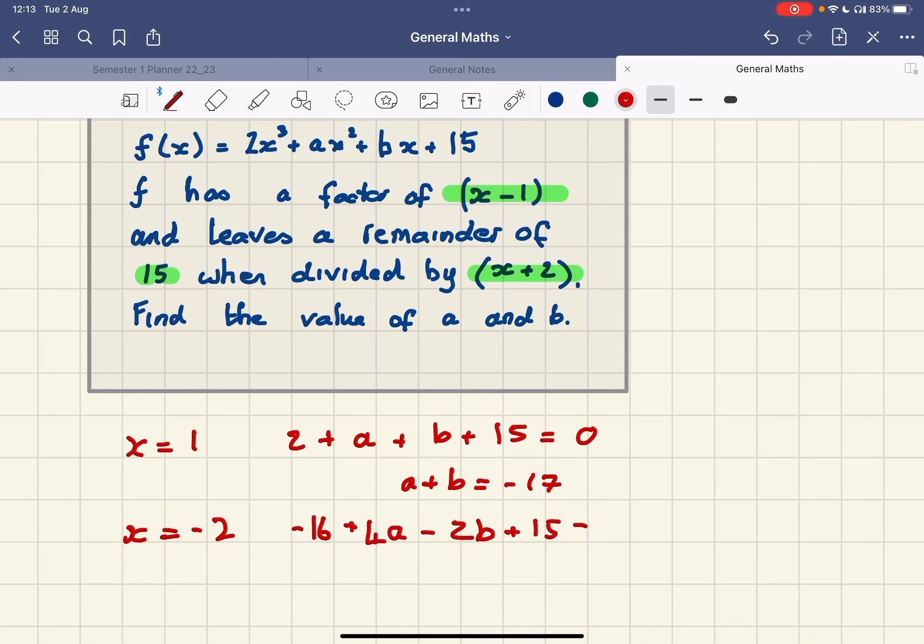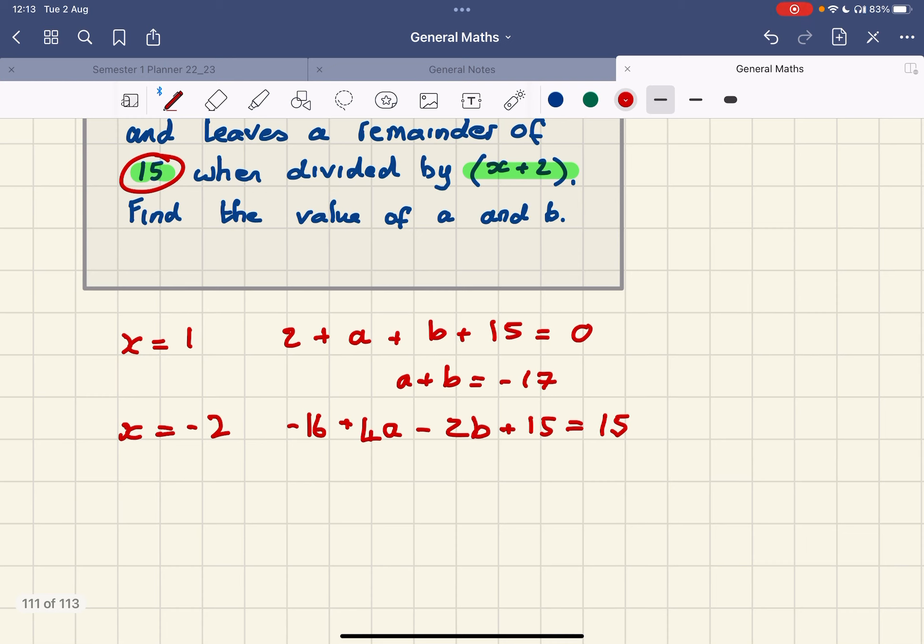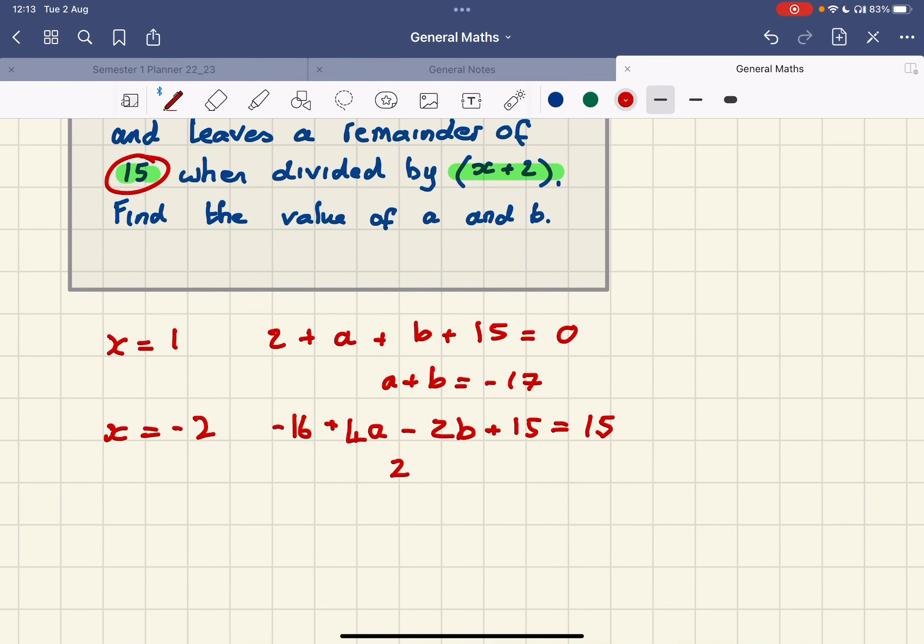This time importantly, it's not equal to 0, it equals—it gives me a remainder of this 15 here. So let's just tidy that up and we've got 4a minus 2b equals 16.